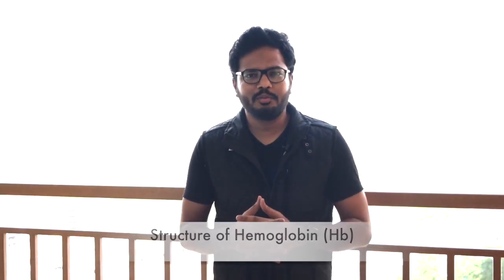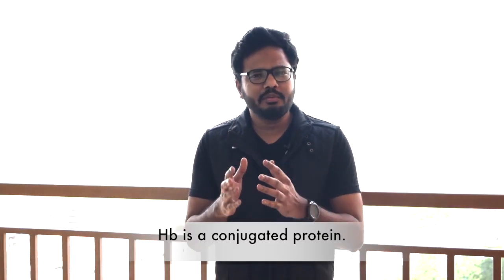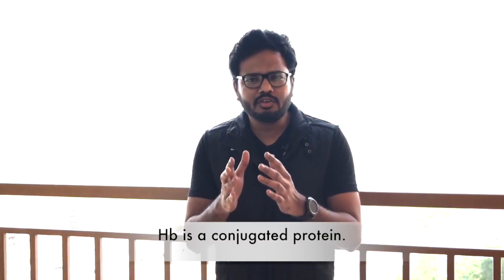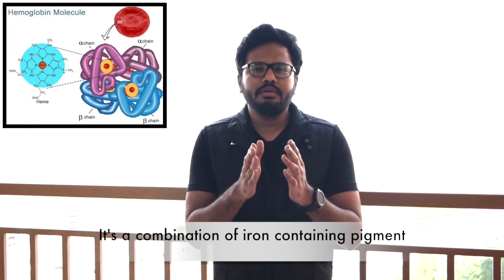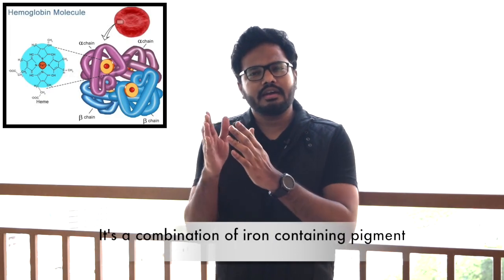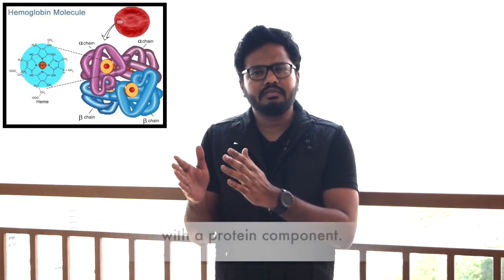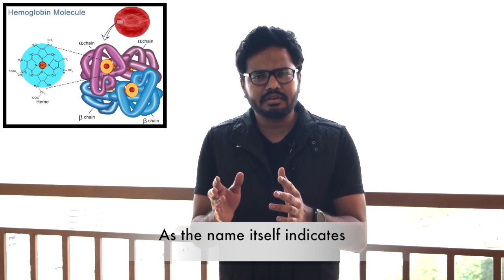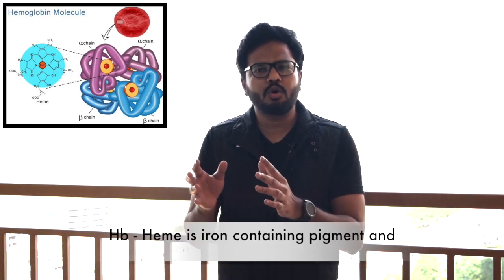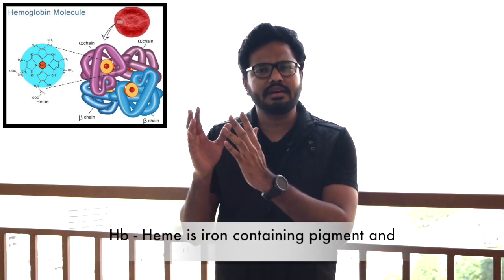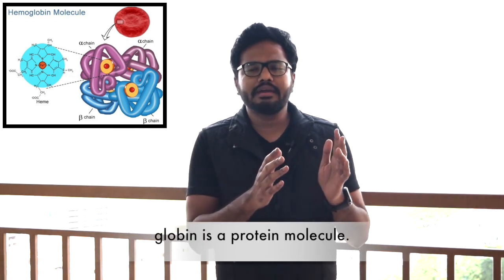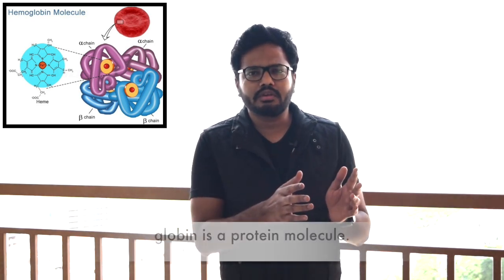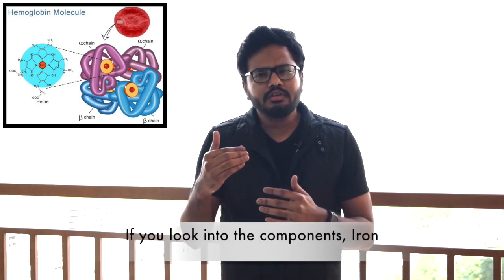Hemoglobin is a conjugated protein — a combination of an iron-containing pigment with a protein component. As the name indicates, 'heme' is an iron-containing pigment and 'globin' is a protein molecule.